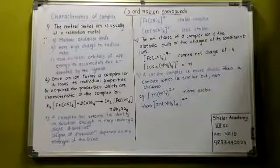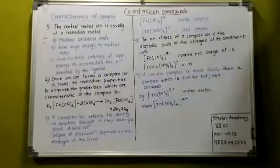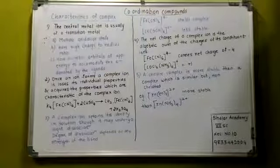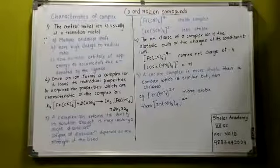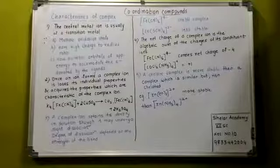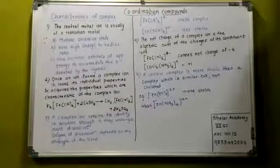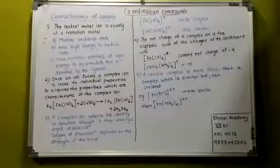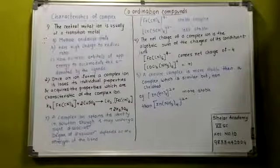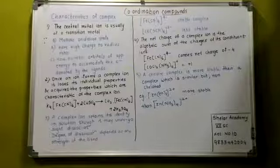The next point: The net charge of a complex ion is the algebraic sum of the charges of its constituent ions. See, I have given example over there. If it is [Fe(CN)6]4-, it has got a net charge of minus 4. Why minus 4? It is x + (-6) = -4, so x is equal to 2, that is 2 minus 6 is equal to minus 4. That's how it is minus 4.